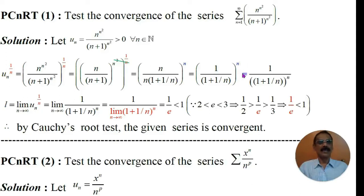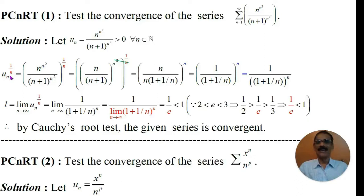That equals 1 to the power n divided by 1 plus 1 by n to the power n, which simplifies to 1 divided by 1 plus 1 by n to the power n. This is the nth root of u_n. Now we have to take the limit. In the root test, we know that the limit of u_n to the power 1 by n as n tends to infinity is L.